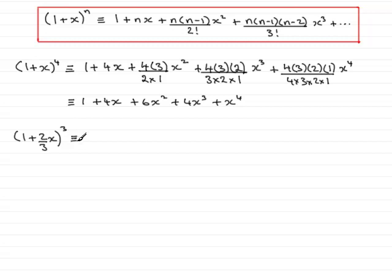Let's have a look at what this will be identical to. Now, in this example n is 3, but the x is being replaced now with 2 thirds x. So we just follow the formula through, but wherever there is an x we replace it with 2 thirds x. So we start off with 1 plus then nx. So n is 3, so that's 3 times, not x really, but the term that is written in place of x, which is going to be 2 thirds x.